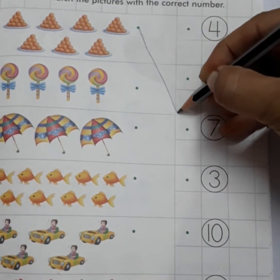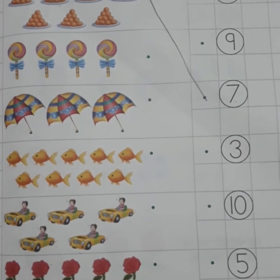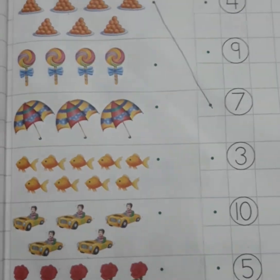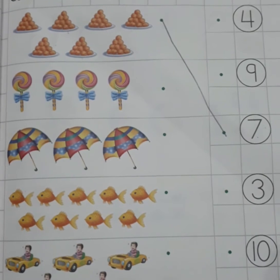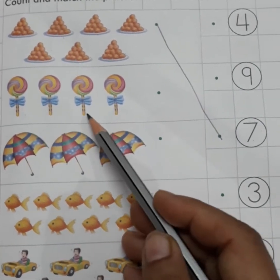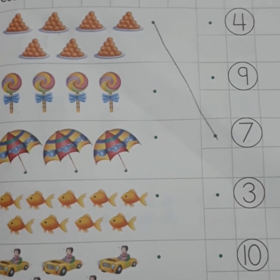Very good. Now, tell me, what are these? Yes, these are lollipops. Now, you will count. How many lollipops are there? One, two, three and four. Number four.